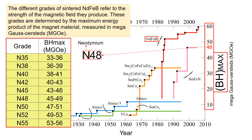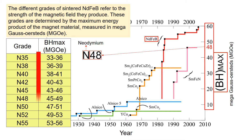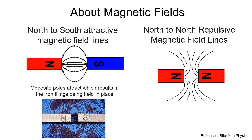Knowing this grade information is beneficial when communicating with the magnet supplier. Of course, the higher number indicates greater magnet strength. To gain a deeper understanding of magnets, let's delve into the fundamentals.